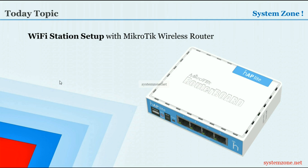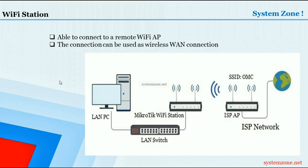Hello everyone, welcome to another System Zones video. In this video I am going to show how to configure Wi-Fi station with a MikroTik wireless router. MikroTik Wi-Fi station is able to connect to a remote Wi-Fi AP and the connection can be used as a wireless WAN connection. For example, if an ISP provides Wi-Fi connection for their clients, then by configuring a MikroTik wireless router as a Wi-Fi station we can connect to that remote Wi-Fi AP and make a wireless WAN connection.